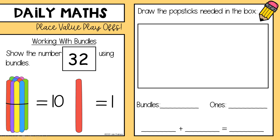Good morning Year One. Welcome to Wednesday's Maths Warm-up. Today we're going to be revising place value. Remember with our number system, when we're looking at place value, we make groups of 10. We've done lots of work throughout the year on making groups of 10 with paddle pop sticks — or lollipop sticks — and straws, to really understand place value.